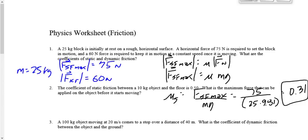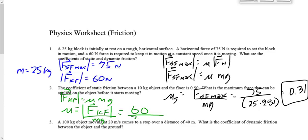Would you expect the coefficient of kinetic friction to be bigger or smaller than 0.31? Smaller. Using F_kf equals mu times M times G and solving for mu: 60 divided by 25 times 9.81 gives 0.24. That's lower than the coefficient of static friction — seems reasonable.